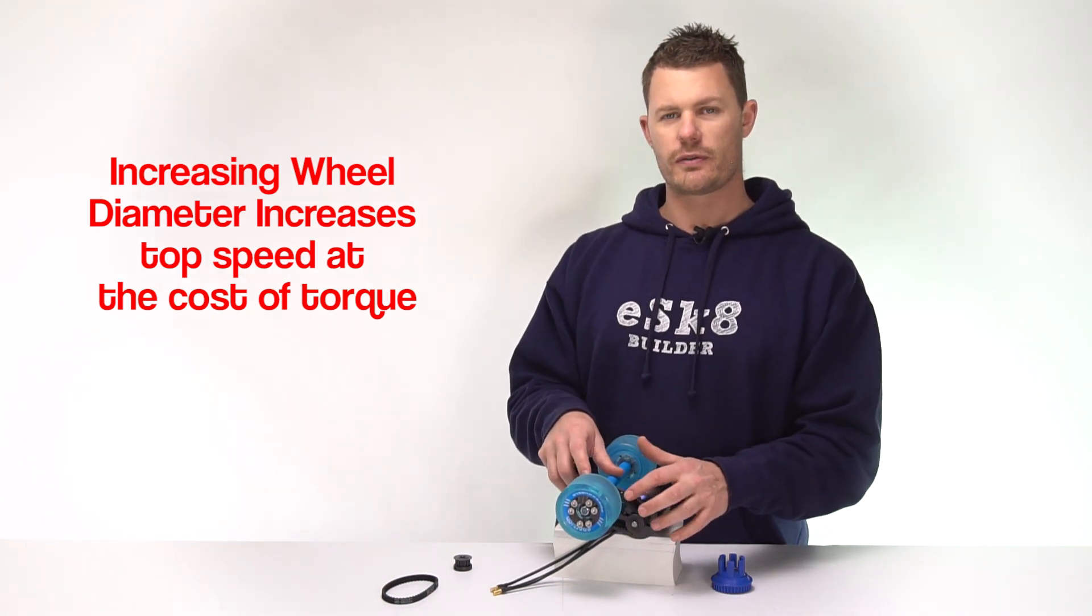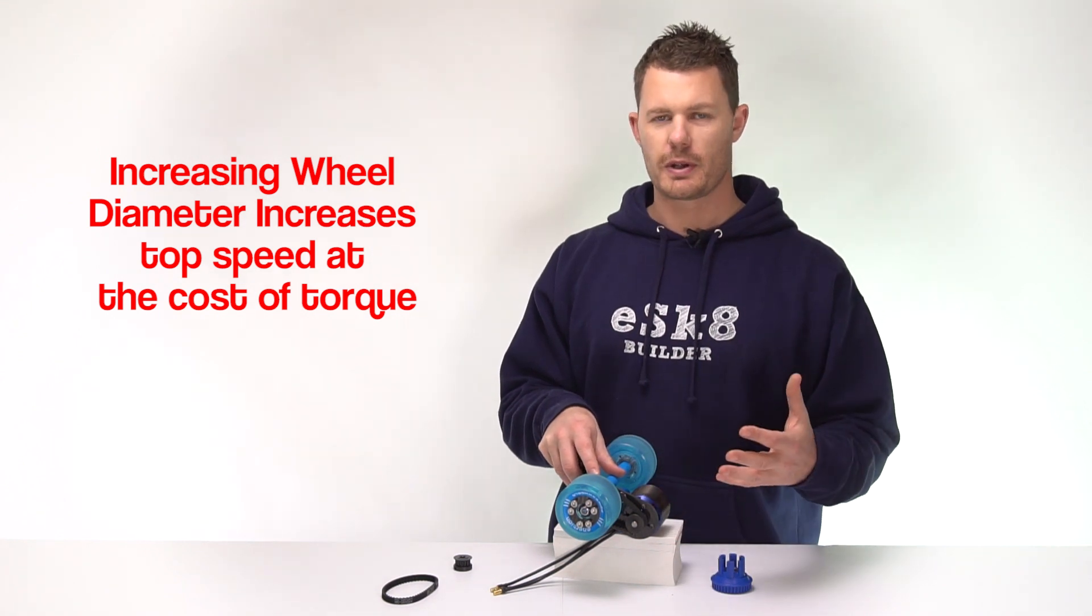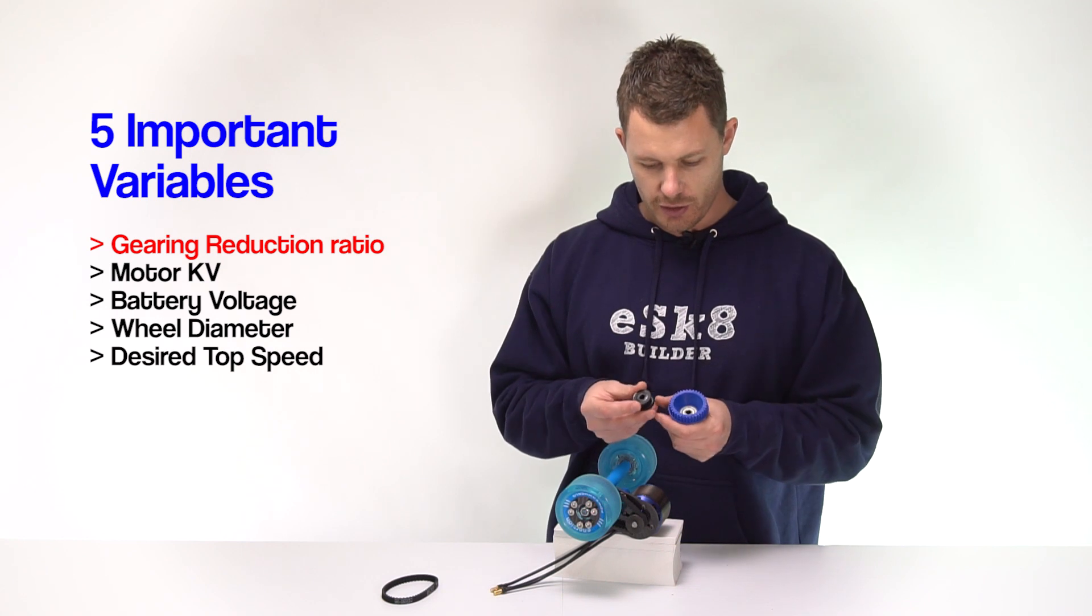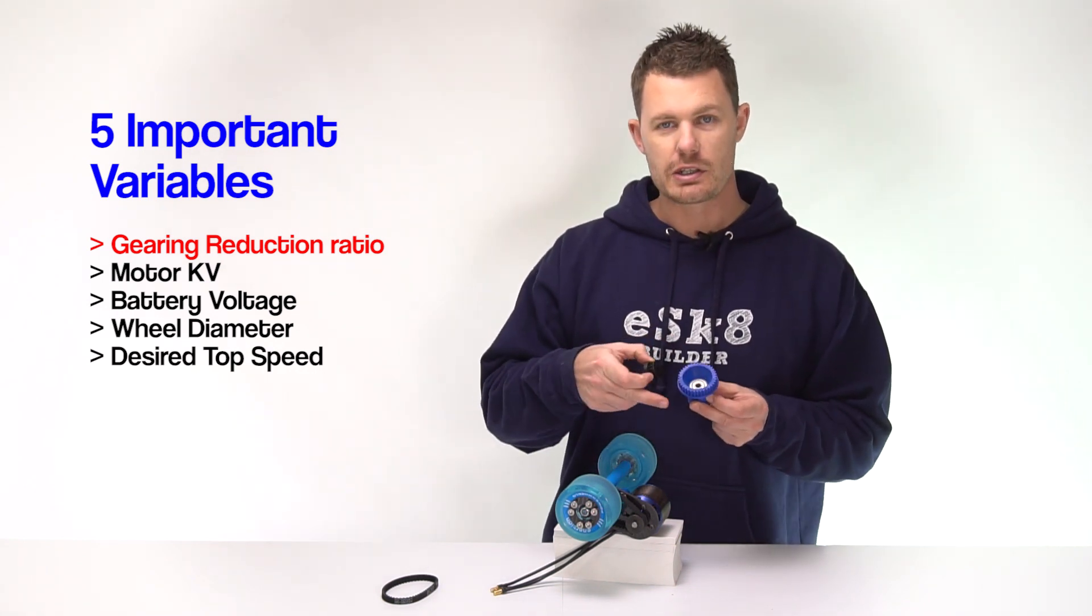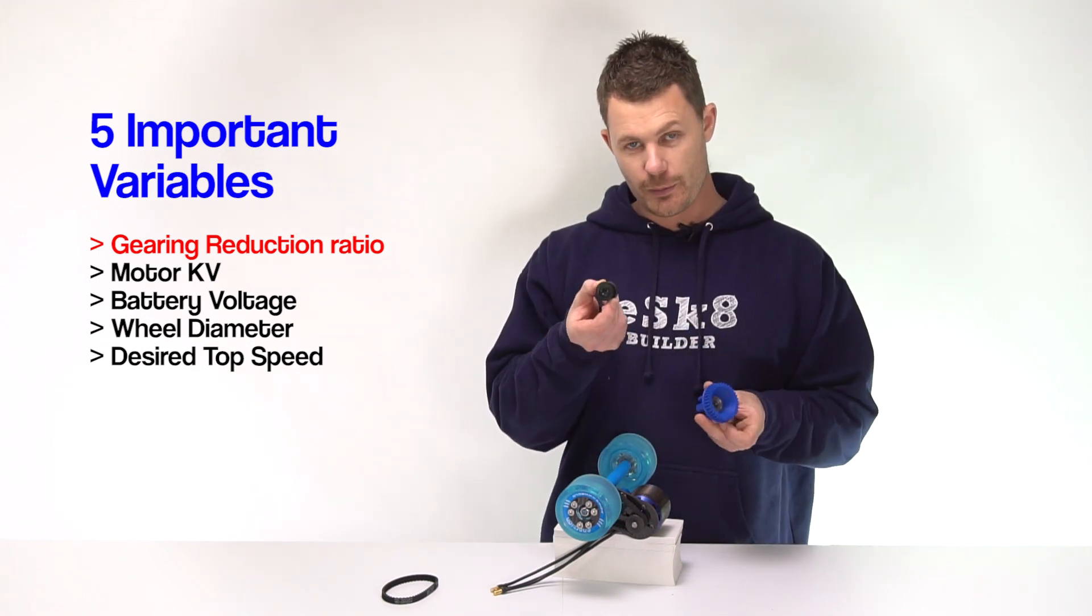So if you do decide to go a larger wheel, what you will have to do is increase the reduction ratio, otherwise your top speed is going to be really fast. To increase the reduction ratio what you need to do is either add more teeth to the wheel pulley or take teeth away from the motor pulley.